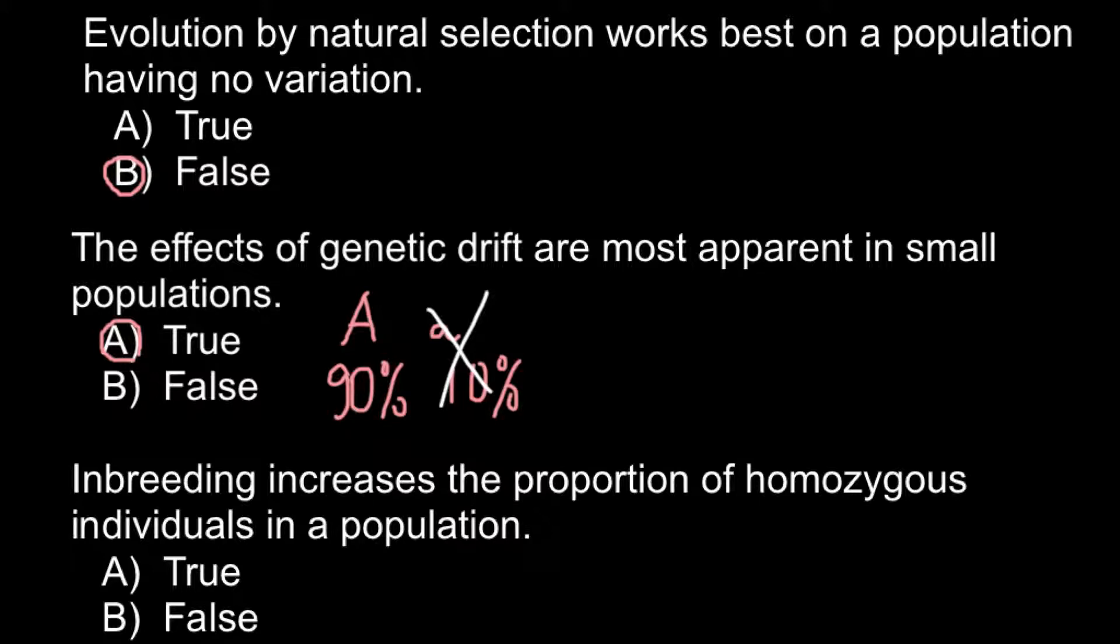inbreeding increases the proportion of homozygous individuals in a population. And this is true, because when we have inbreeding, with each round of inbreeding, for example,